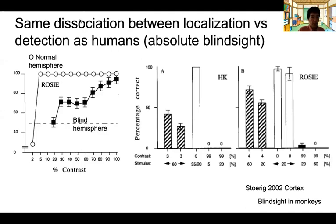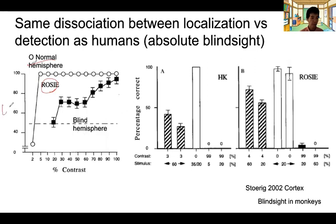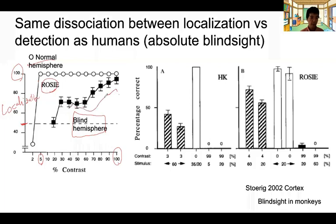The localization accuracy was measured, with 50% as chance performance. In the normal field, when contrast is 5% or above, localization performance is always 100% accurate. In the blind hemifield, she was very good at the highest contrast — almost perfect localization — but performance degraded, remaining above chance up to about 30% contrast, then falling to chance at 20% contrast.